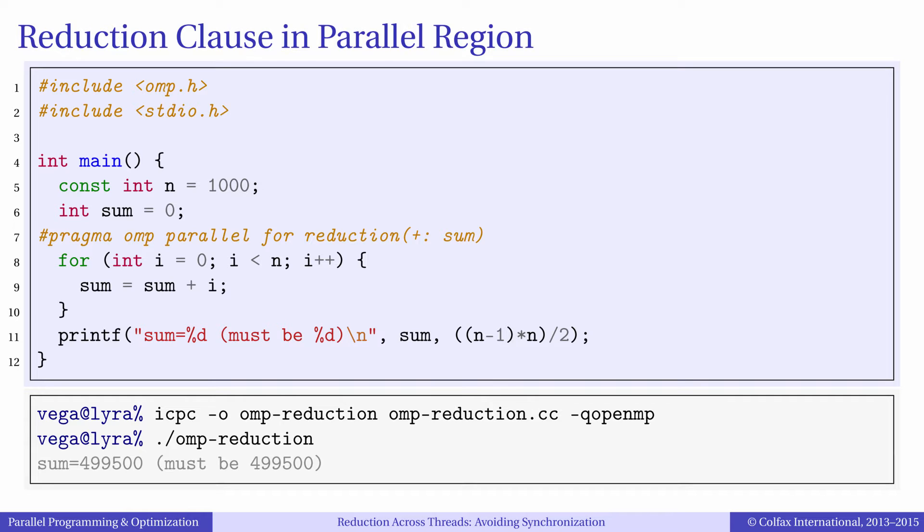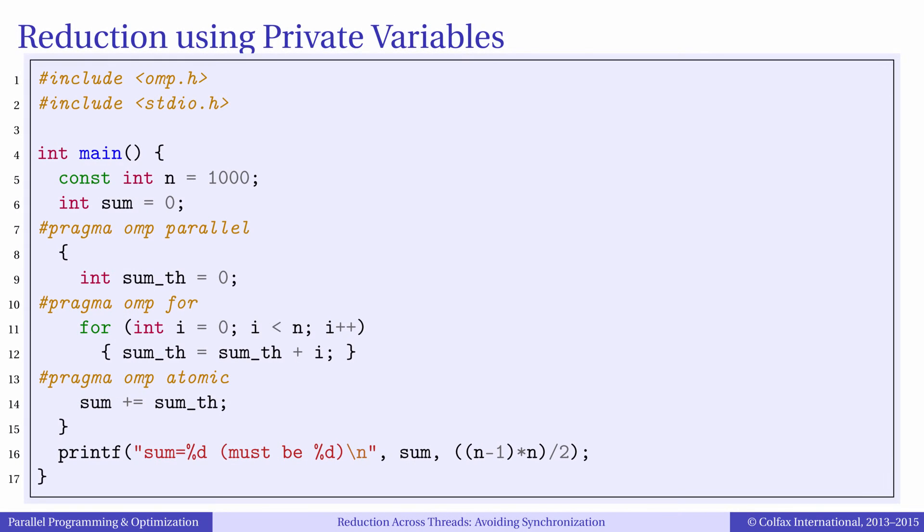It is important to demystify the process that OpenMP uses to protect the race condition without serializing the code. To understand what happens behind the scenes consider this alternative implementation of parallel reduction.